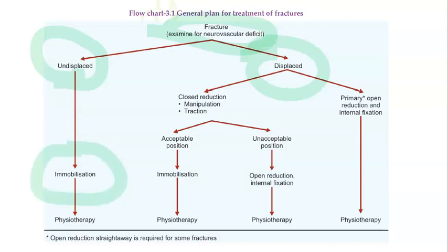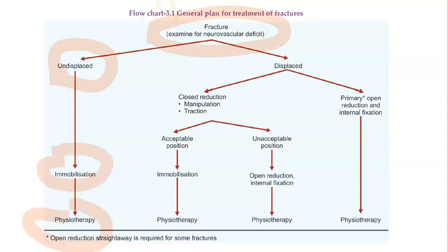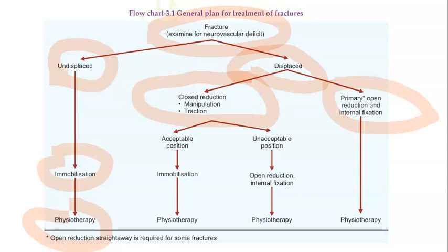A flowchart summarizes management: if the fracture is undisplaced, immobilize and it will heal by itself, then give physiotherapy. If displaced, attempt closed reduction to bring it to an acceptable position, then immobilize and physiotherapy. If closed reduction fails, perform open reduction, then internal fixation, then physiotherapy.